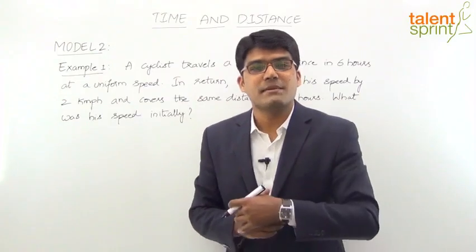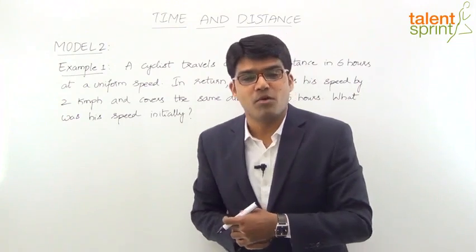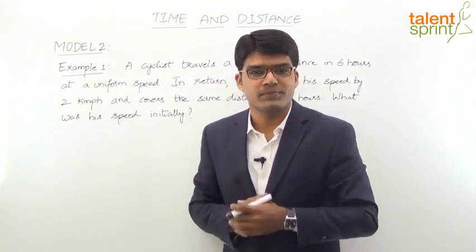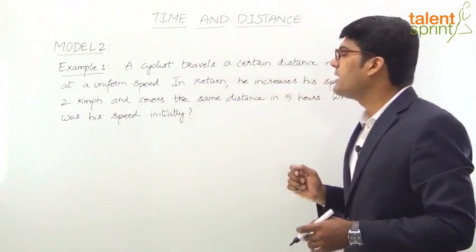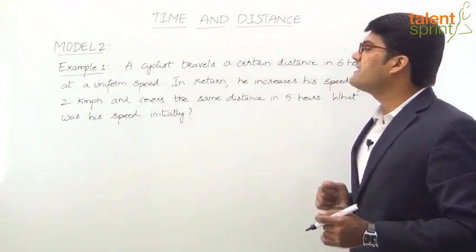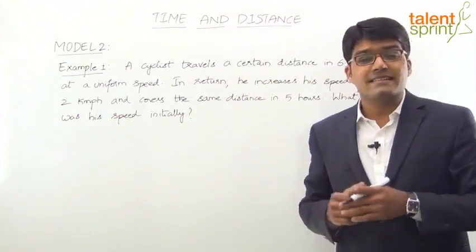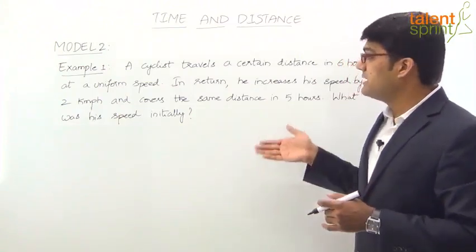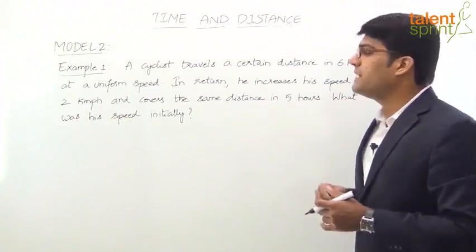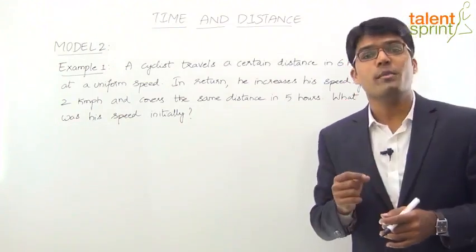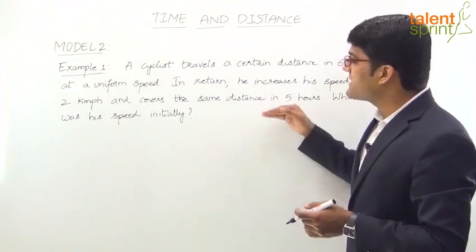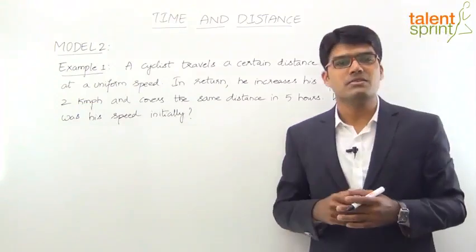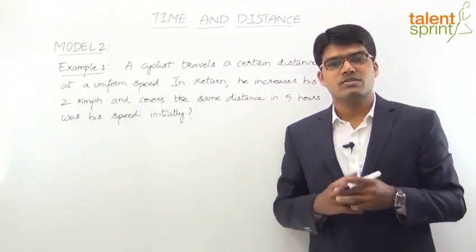Let's discuss Time and Distance Model 2, in which we will solve constant distance based questions. First example: a cyclist travels a certain distance in 6 hours at a uniform speed. In return, he increases his speed by 2 km per hour and covers the same distance in 5 hours. What was his speed initially?